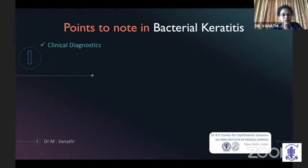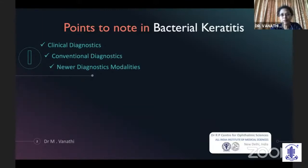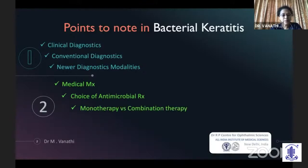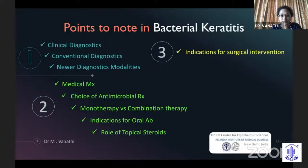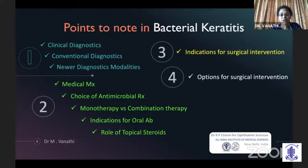What a postgraduate needs to note when dealing with bacterial keratitis, taken point-wise: diagnostics — what are the clinical diagnostics, the conventional diagnostic methods, and the newer diagnostic methods. For medical management, you need to know all aspects involved: the choice of antimicrobial therapy, monotherapy versus combination therapy, indications for oral antibiotics, and the role of topical steroids. Next is the indications for surgical intervention, the various surgical options, and collagen cross-linking — a non-pharmacological therapeutic option used in management of recalcitrant ulcers.